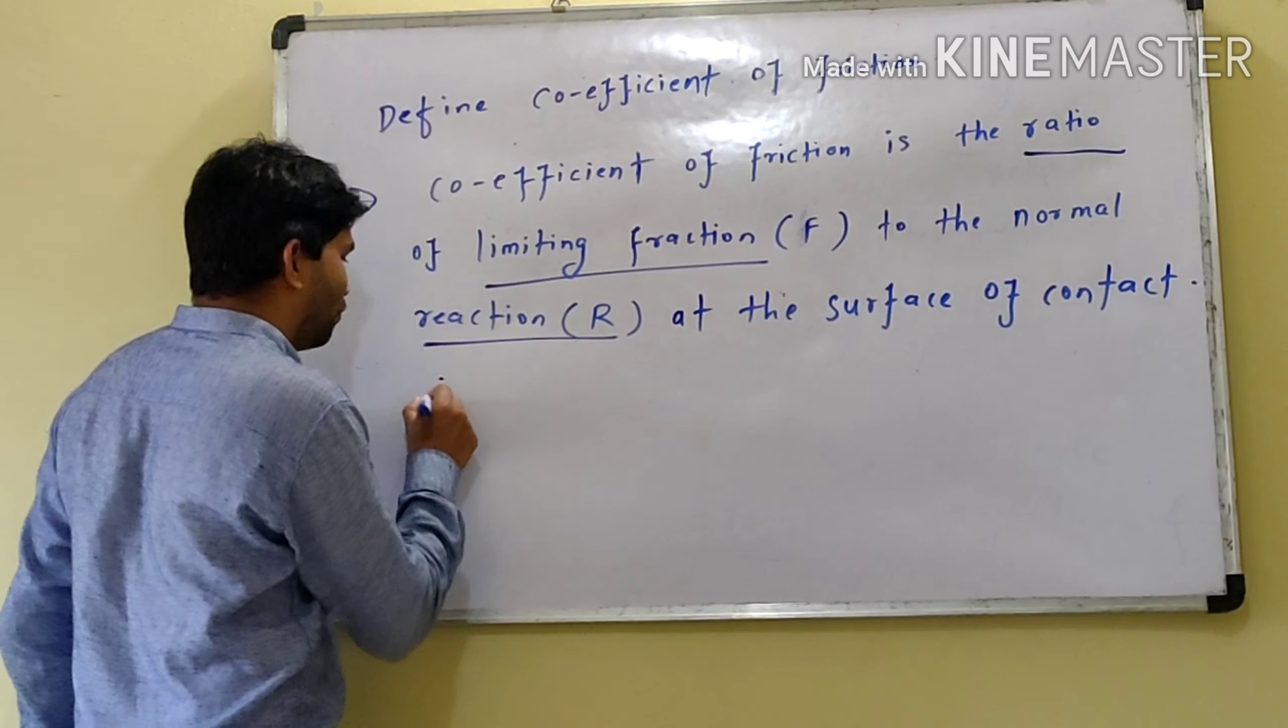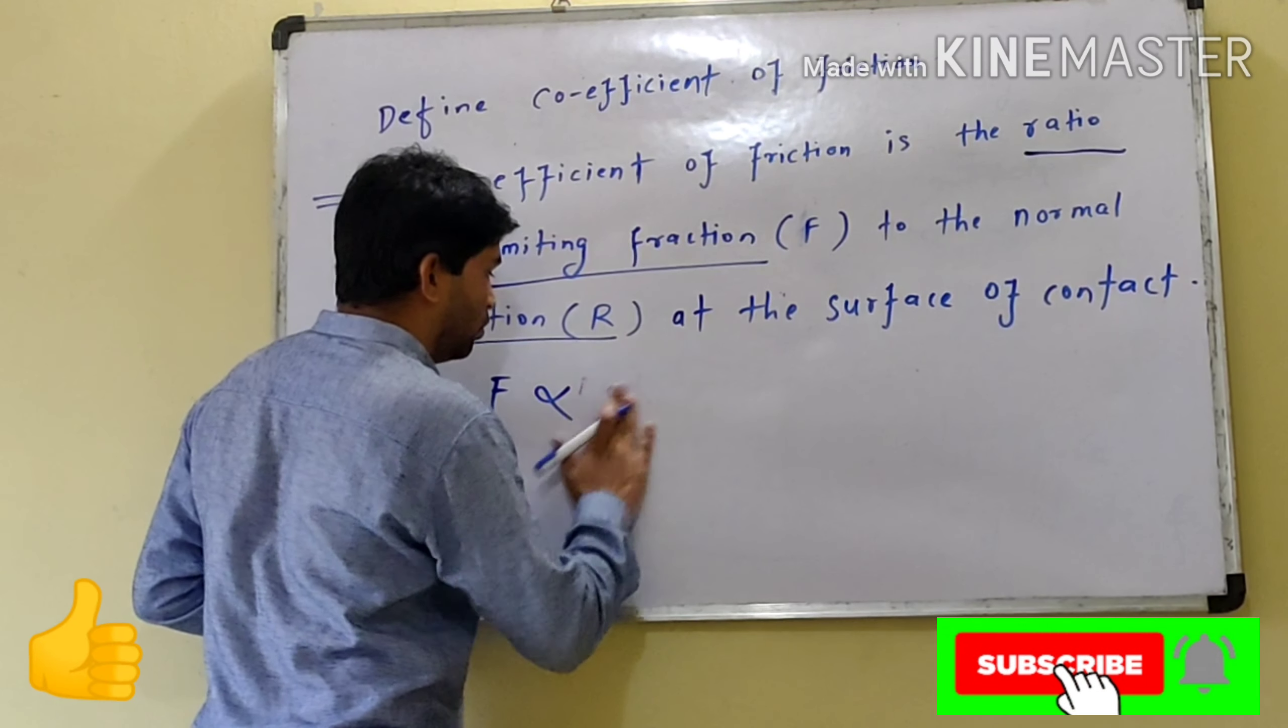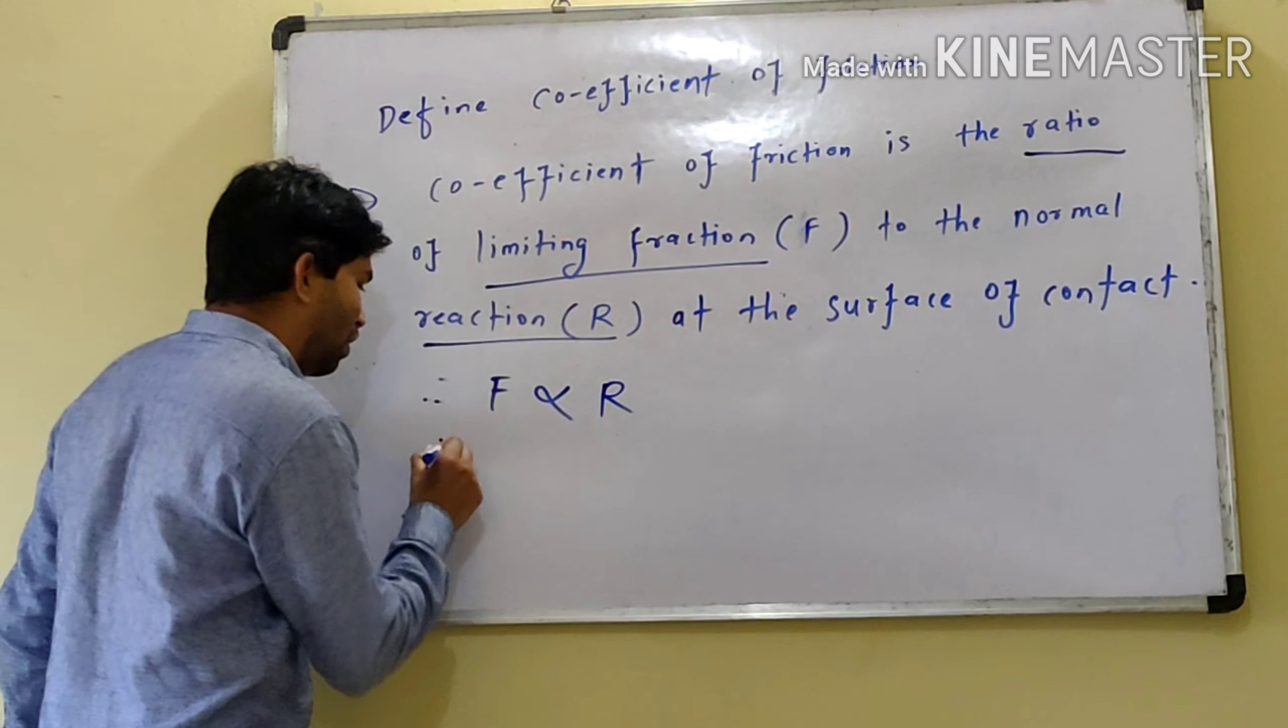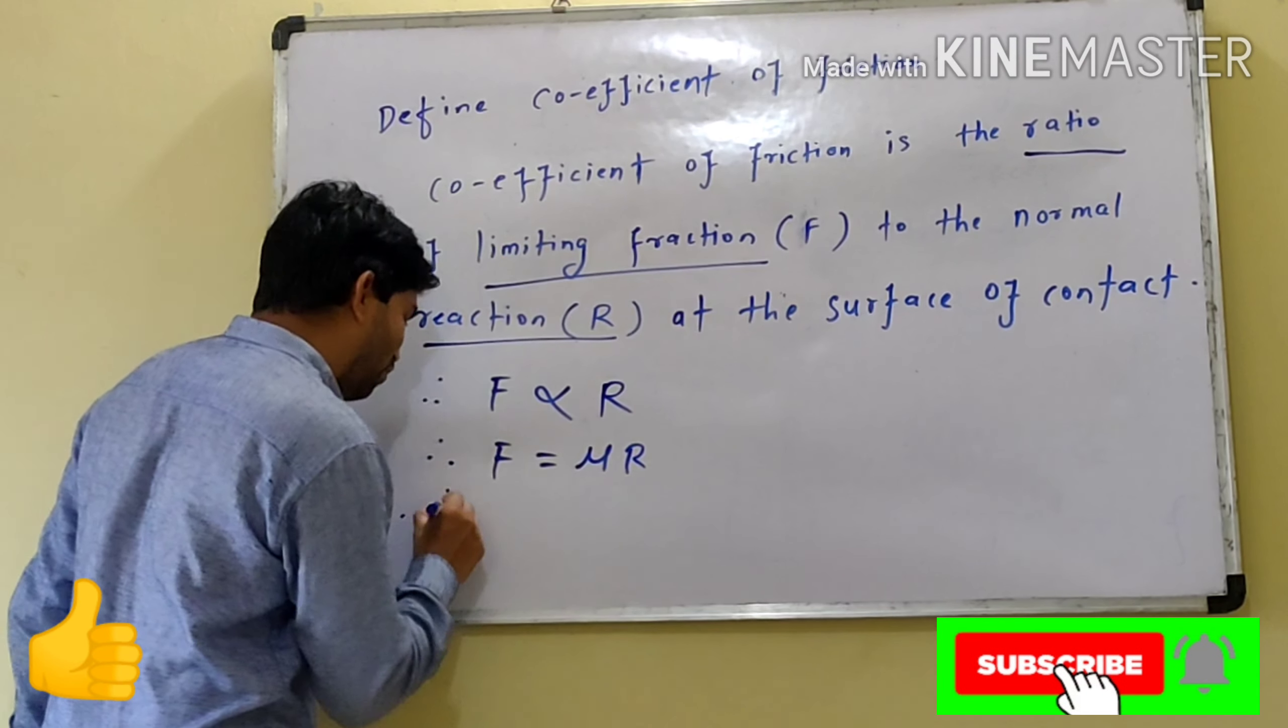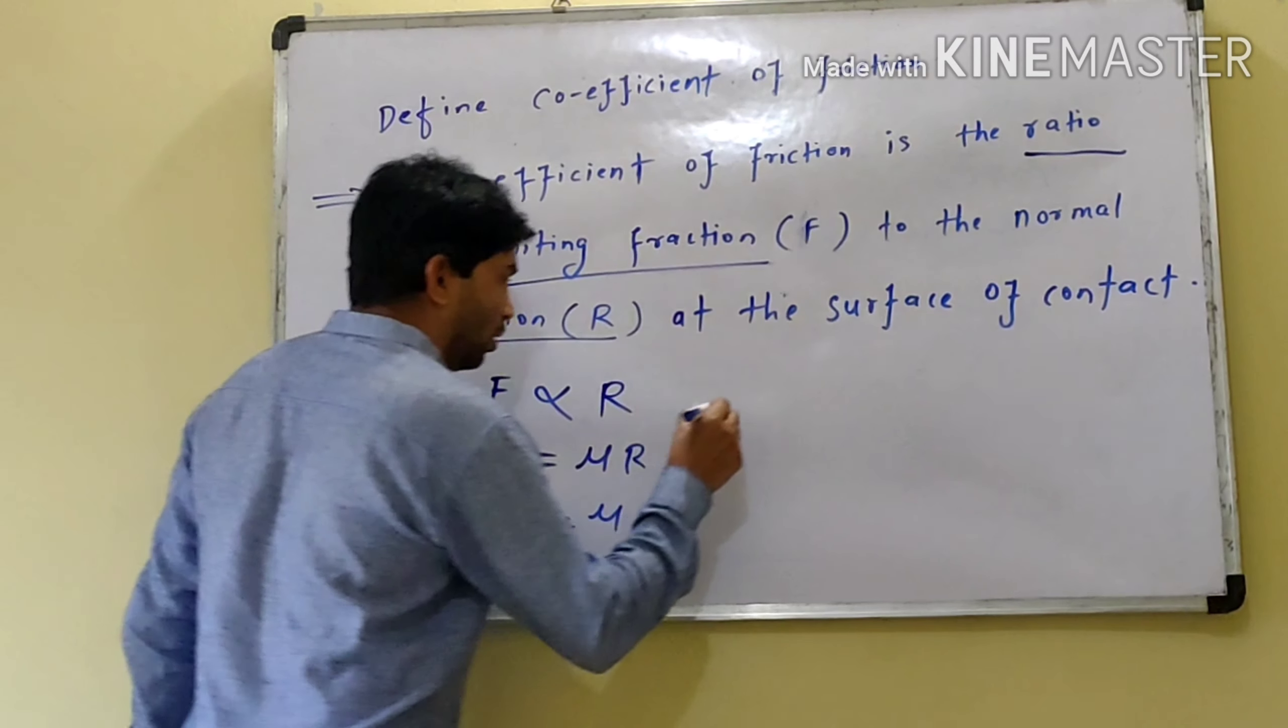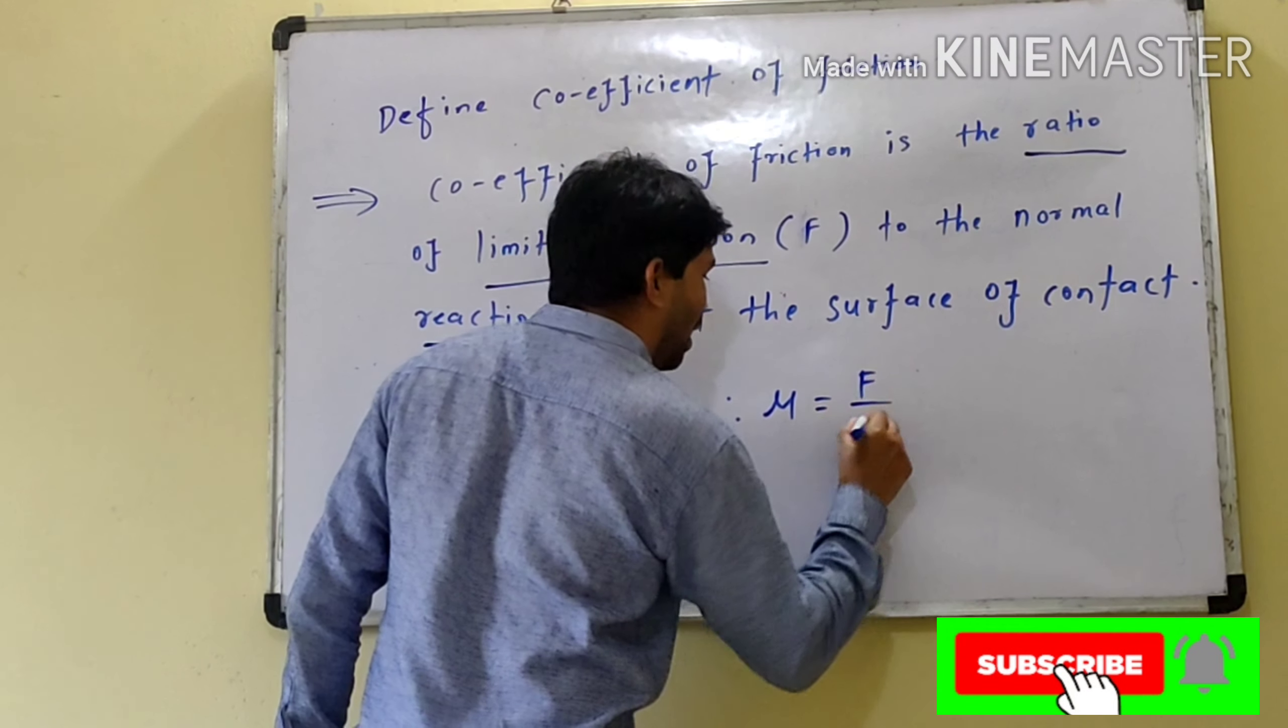Therefore, F is directly proportional to R. F is equal to μR. Therefore, F upon R is equal to μ. Hence, μ is equal to F upon R.